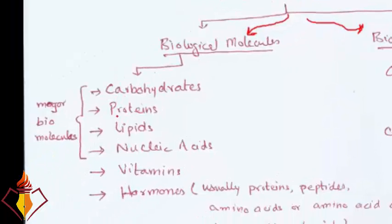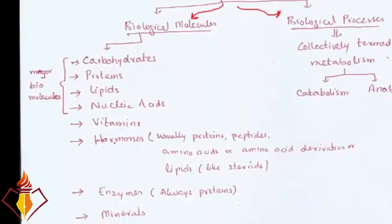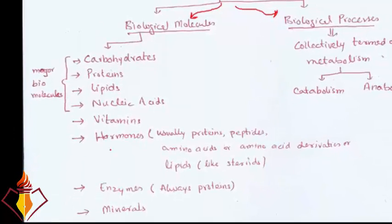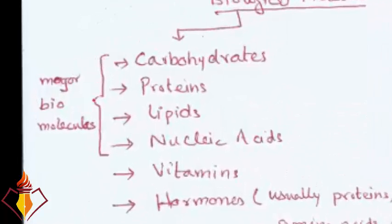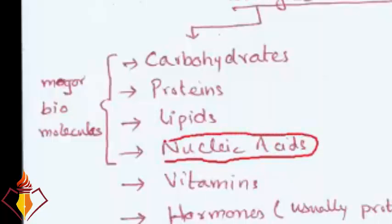The biological molecules include carbohydrates, proteins, lipids, nucleic acids, vitamins, hormones, enzymes, and minerals. Out of these biomolecules, the most important are the four major ones: carbohydrates, proteins, lipids, and nucleic acids. Nucleic acids are very important because they are dealt with in a separate branch of biochemistry called genetics, so we reserve them here.